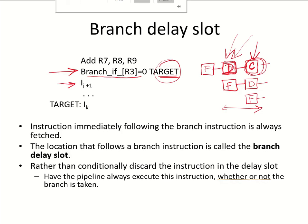When we are computing the target address in the decode stage as well as doing the comparison in the decode stage, only i(j+1) needs to be fetched. This comparison can be done by including a comparator in the decode stage. The output of the register file can be straight away checked using the comparator, and the decision can be made whether the branch will be taken or not taken.